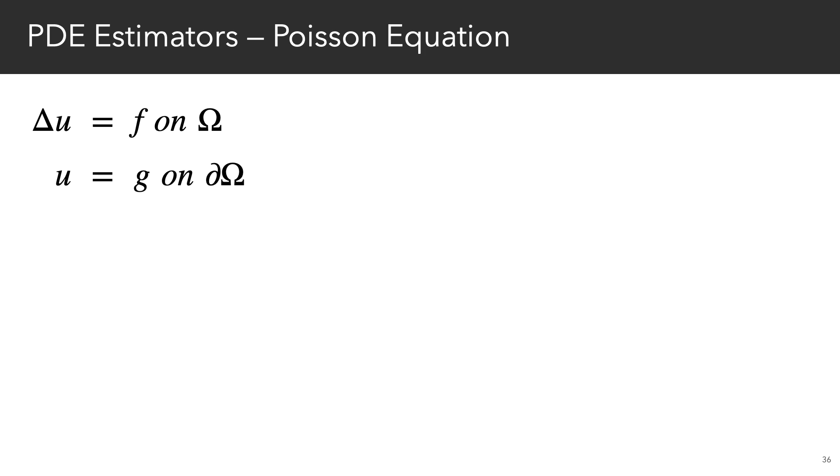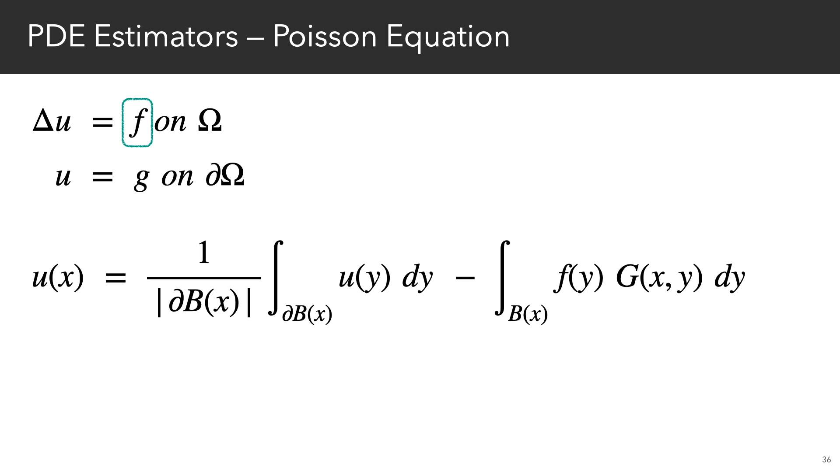So in particular, the Poisson equation, which is used for problems such as surface reconstruction and shape editing, introduces an additional source term f. The integral formulation for this equation generalizes the mean value property.